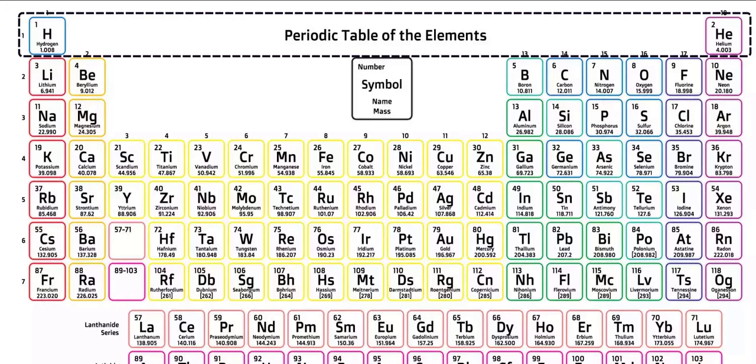As an example, let's take the first row, which has only one electron shell. Hydrogen has one electron, while helium has two.